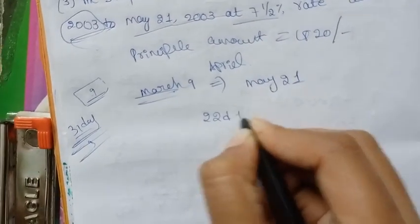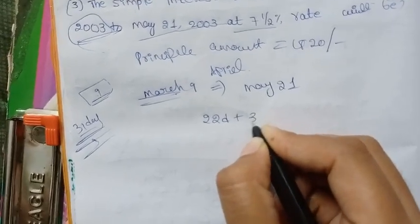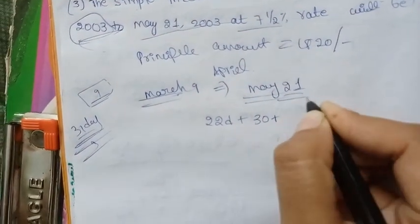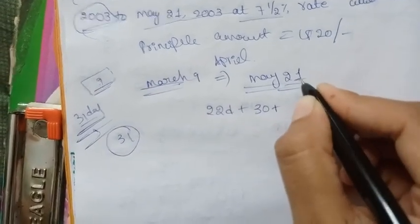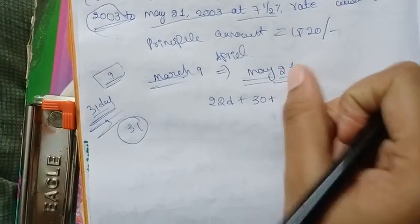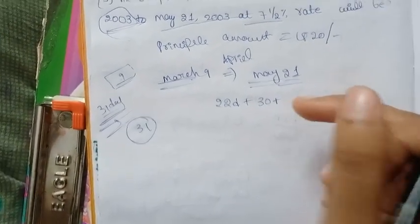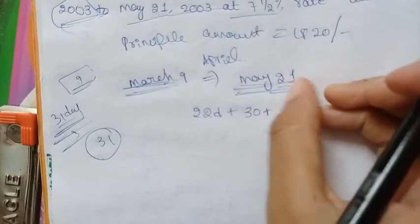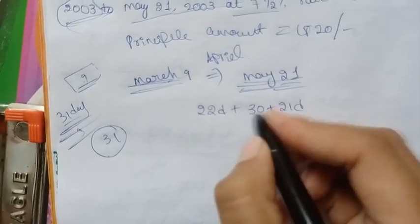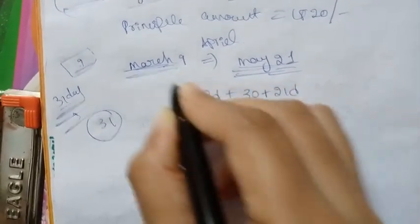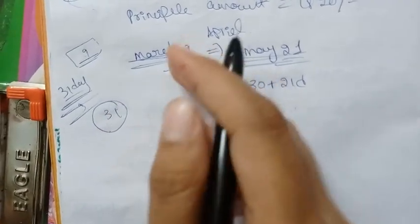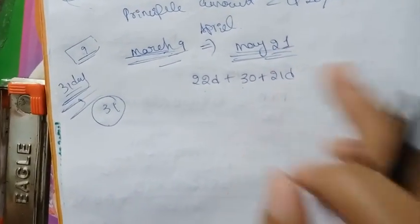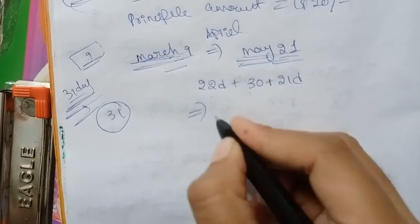So in March there are 22 days. In April there are 30 days. Plus May 21 days. March 9th: 31 minus 9 is 22 days. April: 30 days. May: 21 days. Now we add these days: 22 plus 30 plus 21 equals 73 days total.